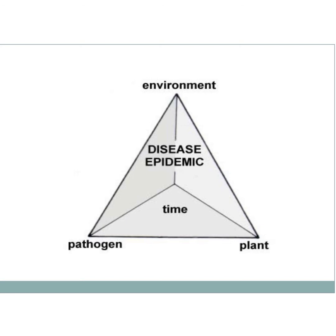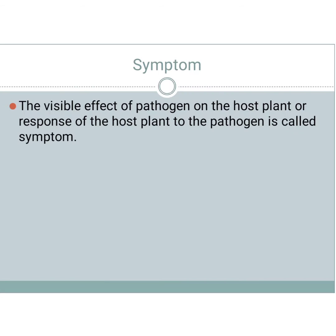Stevens and Van der Plank recognized time as a fourth factor in the disease triangle, so it is called the disease tetrahedron. Then the disease pyramid consists of a fifth factor — man, that is human being — as the fifth factor, and that is called the disease pyramid.